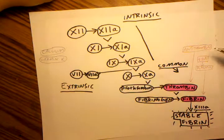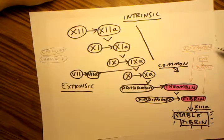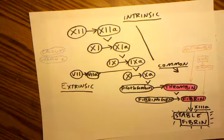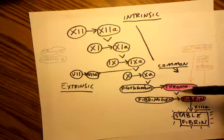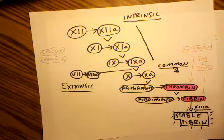A couple that are real important is there is an antagonistic factor floating around called antithrombin. And antithrombin's job is basically to inhibit thrombin. It also inhibits a couple other factors but that's its big job. It basically prevents thrombin from being activated.